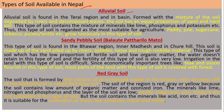The first one is alluvial soil. Alluvial soil is found in the Tarai region and in Bhabar. It is formed with a mixture of soil deposited by rivers and decomposed leaves. The soil has equal proportions of sand and hard soil, and contains minerals like lime, phosphorus, and potassium.